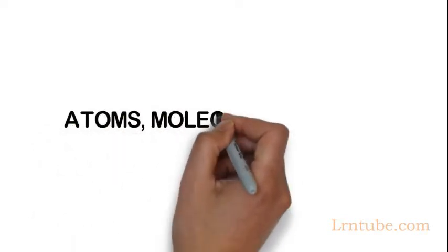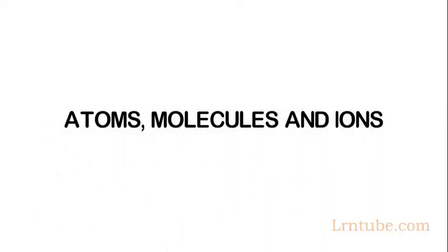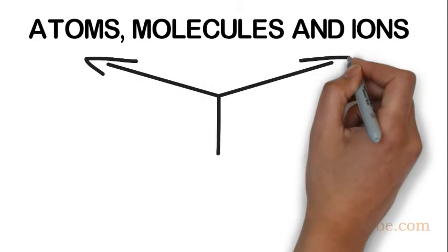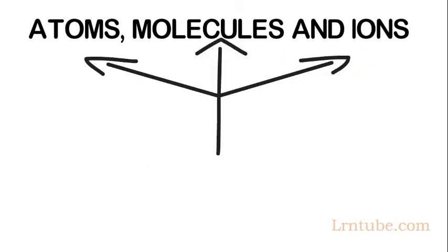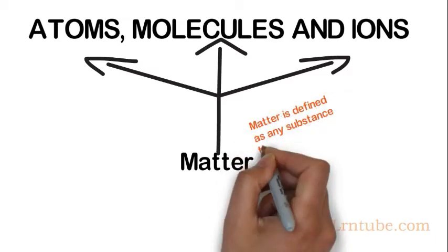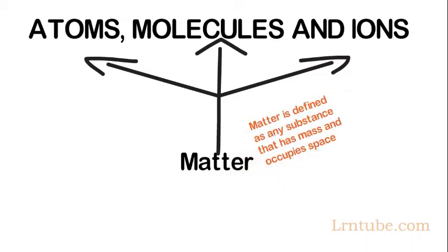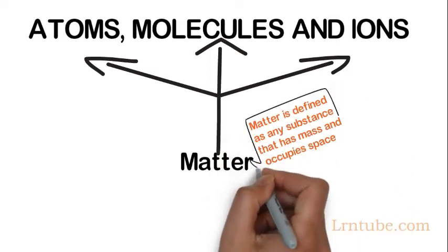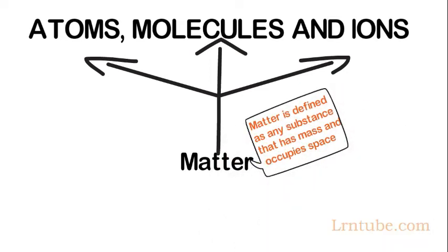Today we are going to discuss atoms, molecules, and ions. All these particles are classified as matter, and matter is defined as any substance that has mass and occupies space. Matter is made up of atoms, molecules, and ions.